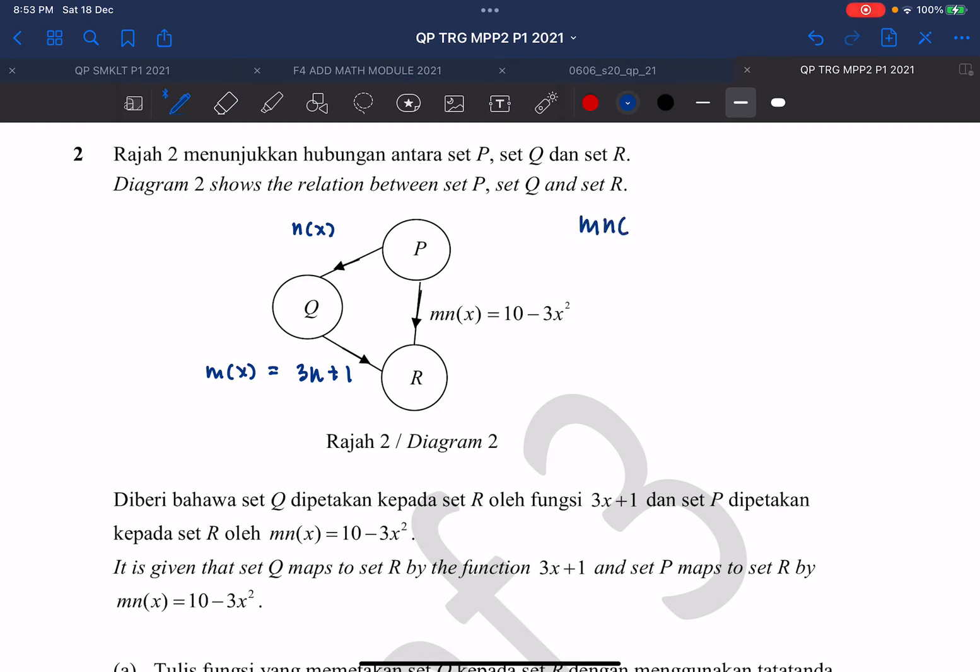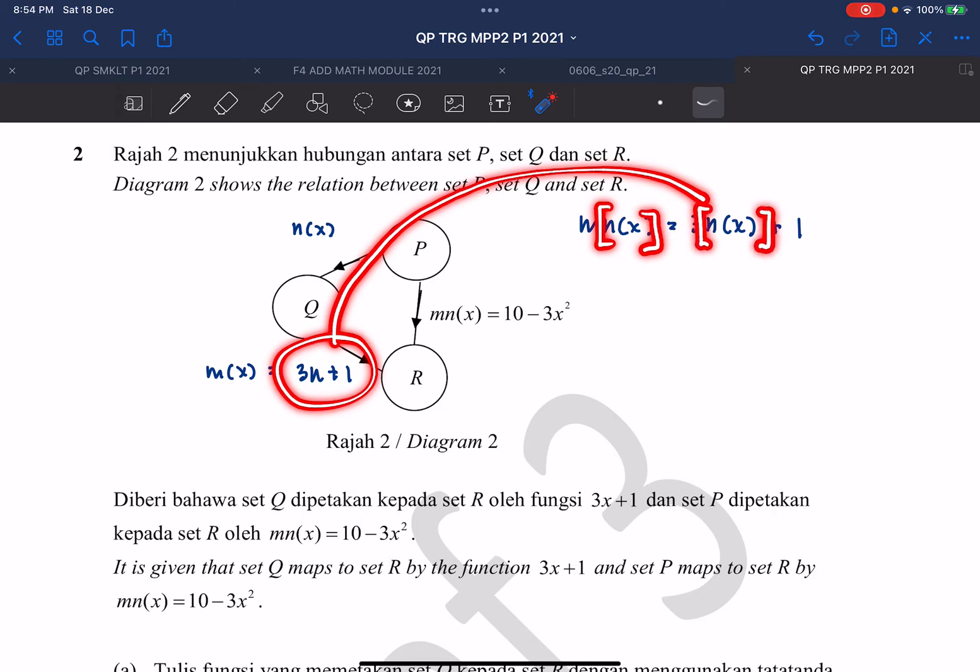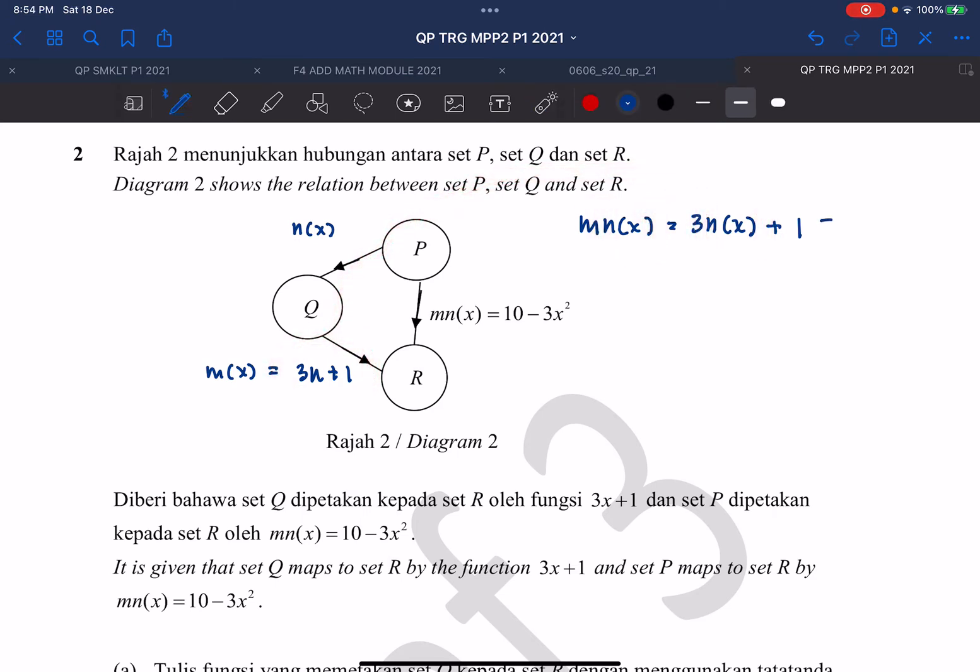Function M composite with N(x) is actually 3N(x) plus 1, because function MN is actually 3x plus 1. So when we input N(x) inside, the x will change into N(x). And this thing is actually equal to 10 minus 3x squared. And we rearrange, N(x) will be equal to—3N(x) will be equal to 9 minus 3x squared. And N(x) will be equal to 3 minus x squared. So that's your answer for question B1. N(x) equals 3 minus x squared. And you gain 1 mark for a step and 1 mark for the final answer.